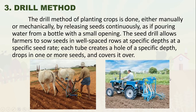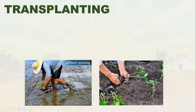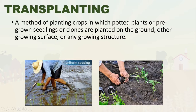This is an example of the drilling method — it can be done through a traditional method using a carabao to pull the drill, or using a machine. Next is transplanting: a method of planting crops in which potted plants or pre-grown seedlings or clones are directly planted on the ground or other growing surface. The difference between direct seeding and transplanting is that in transplanting you grow the plants in a seedling tray first, while in direct seeding you insert seeds directly into the ground.